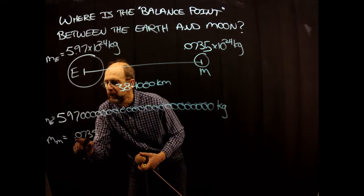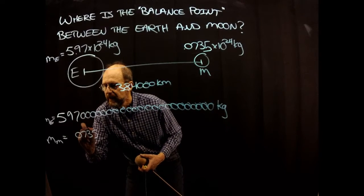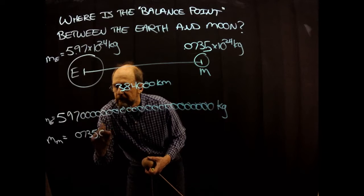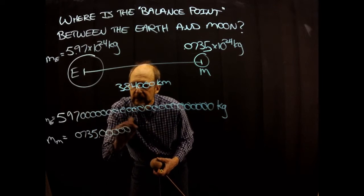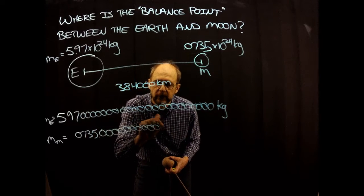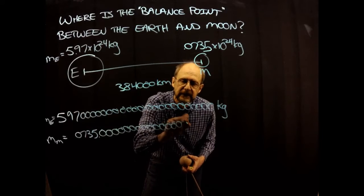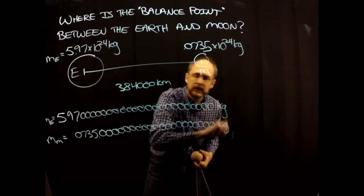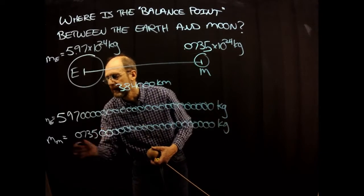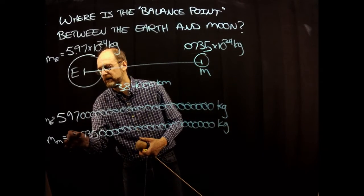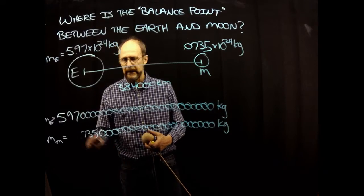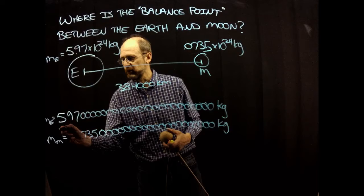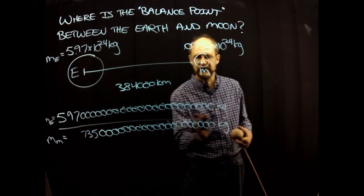We're starting with the decimal point here. I'm going to erase it. And I'm going to move 24 places to the right: 1, 2, 3, all the way through 24 kilograms. And we don't need this 0 here. And so it's a big number. It's a lot of kilograms in the moon, but significantly less than the earth.